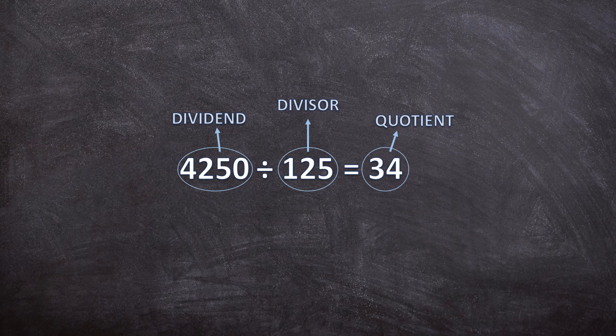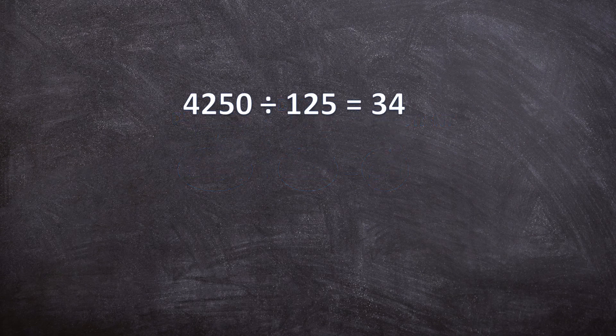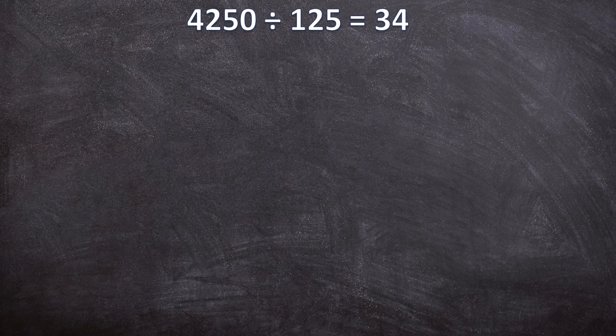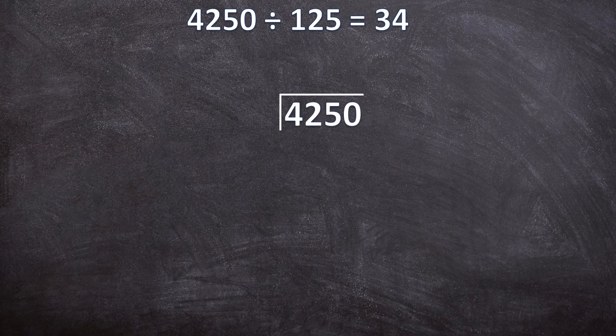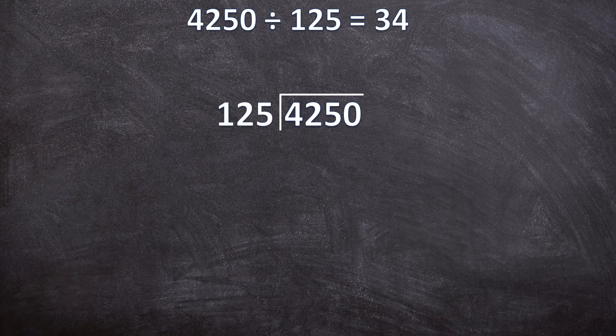So let's have a look at this example. But before getting the solution for this problem using long division, we first need to set it up in the correct way. So the first thing you need is your long division bracket. Your dividend goes underneath the bracket, your divisor goes in front of the bracket, and your answer will always go on top of the bracket.